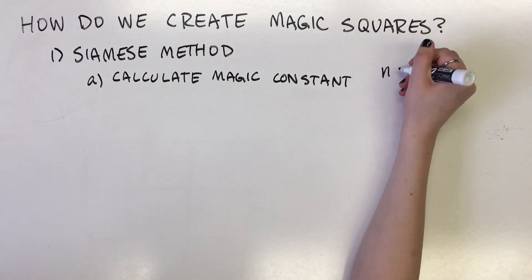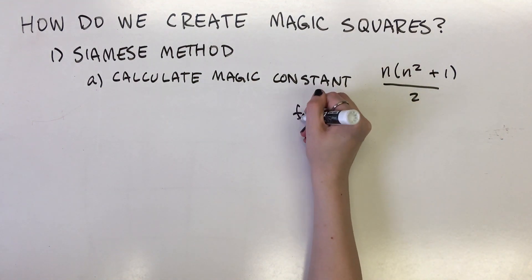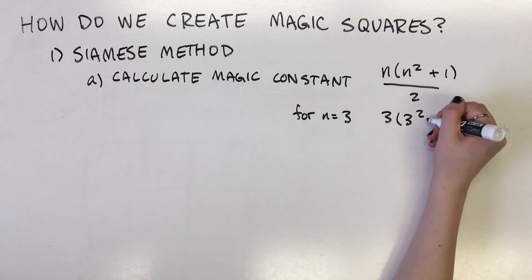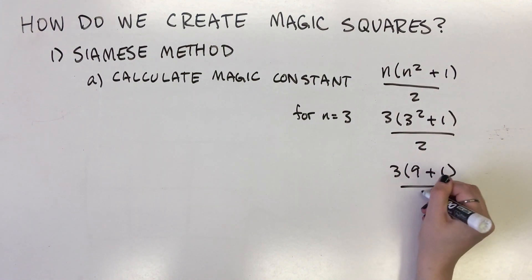For example, in a 3 by 3 magic square, n equals 3, so the magic constant equals 3(9+1)/2, which is equal to 3 times 10 over 2, which is equal to 3 times 5, which is 15.